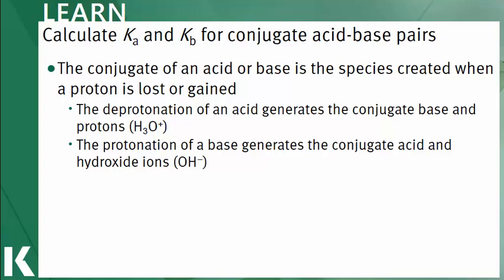The best way to illustrate conjugate pairs is through the autoionization of water. The autoionization of water is a reaction with two equivalents of water, so two H2Os. These waters react to create two products. One product is the result of the deprotonation of water, or the loss of hydrogen, yielding a hydroxide ion. The other product is created from the protonation of water, or the addition of the hydrogen, resulting in a hydronium ion.